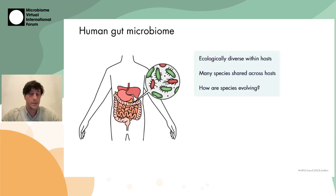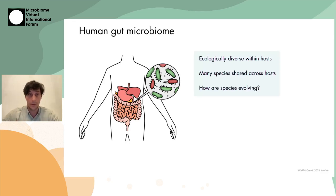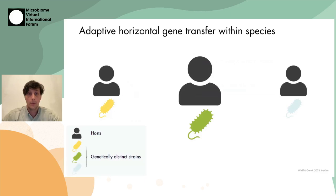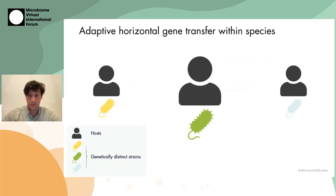Because of this, we can see how species are evolving across a global human population. One of the most striking phenomena that's been noted is the existence of adaptive horizontal gene transfer within species.